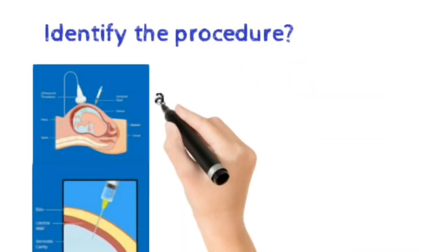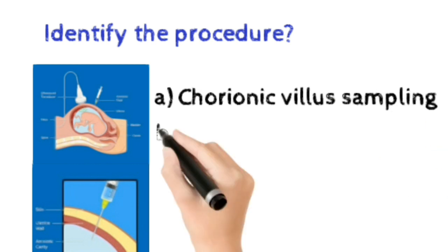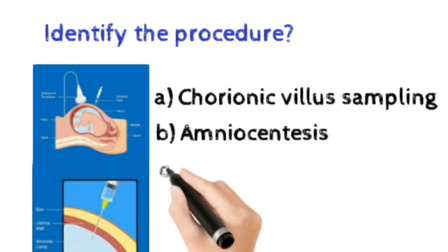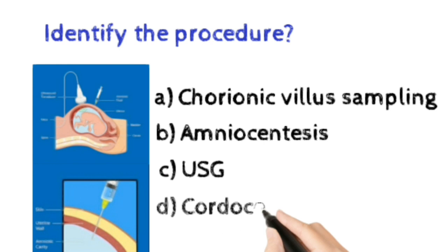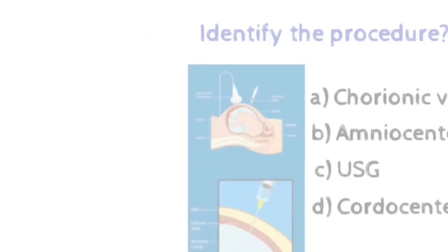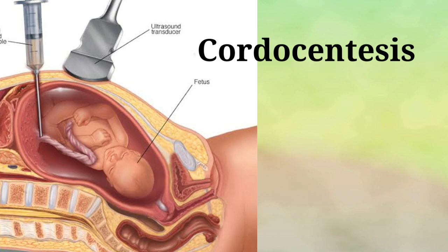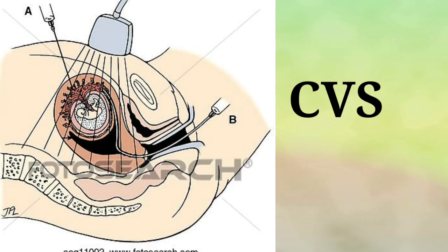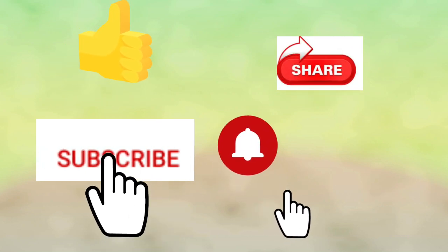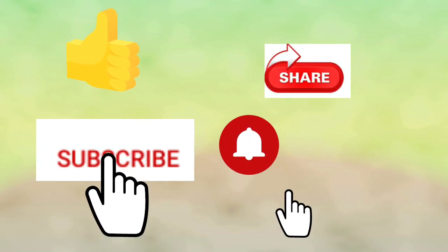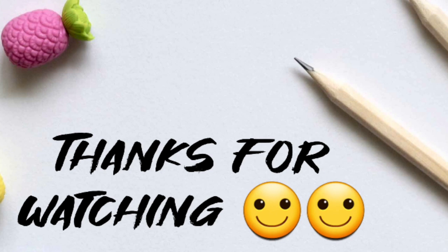Question number ten: identify the procedure from this image. Option A: Chorionic villus sampling, Option B: Amniocentesis, Option C: Ultrasonography, Option D: Cordocentesis. The correct answer is Option B, amniocentesis.